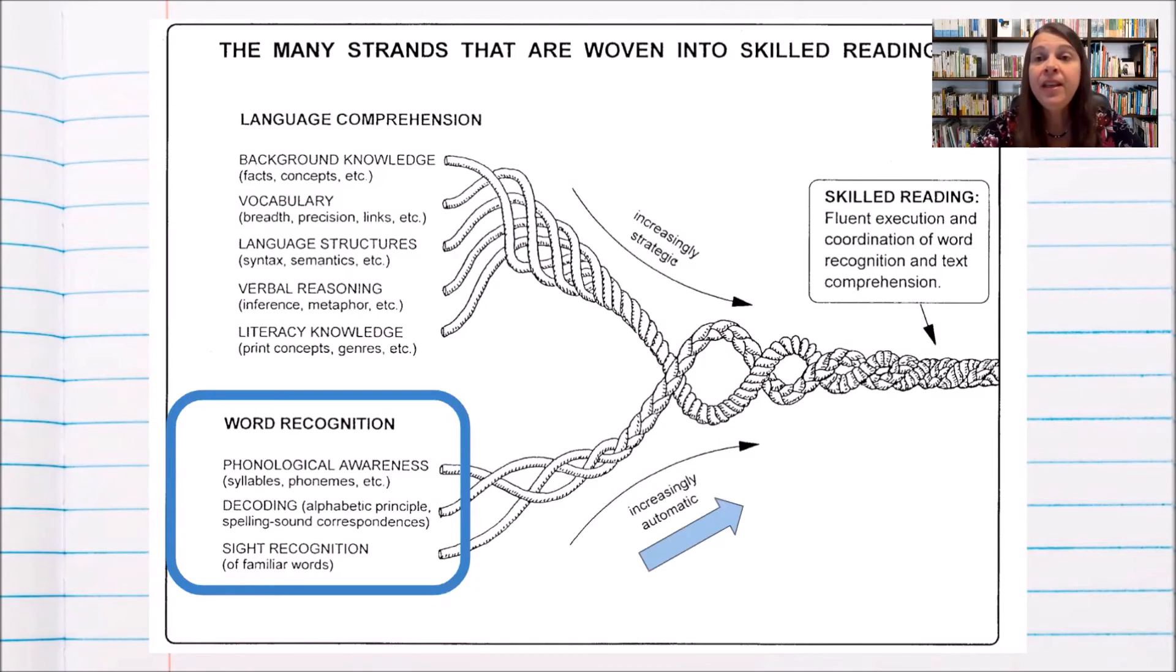Once we build these skills in students, they can become increasingly automatic, freeing up that important brain space to think about content. That leads to skilled reading, and that is our goal after all, right?